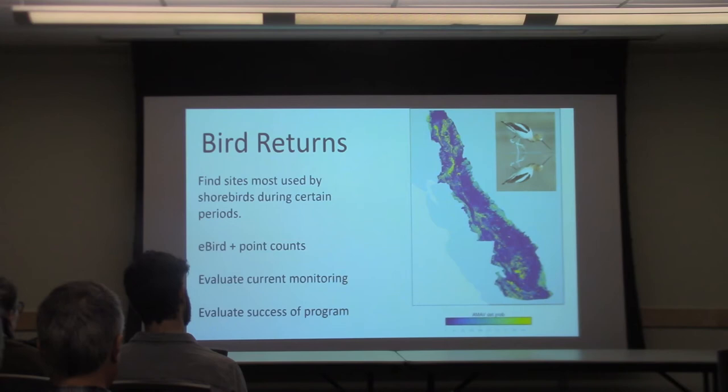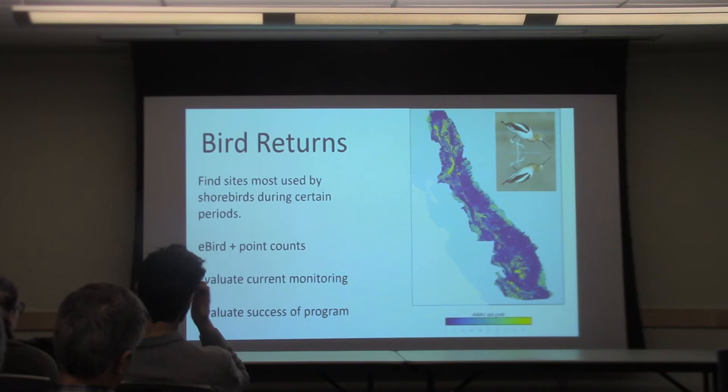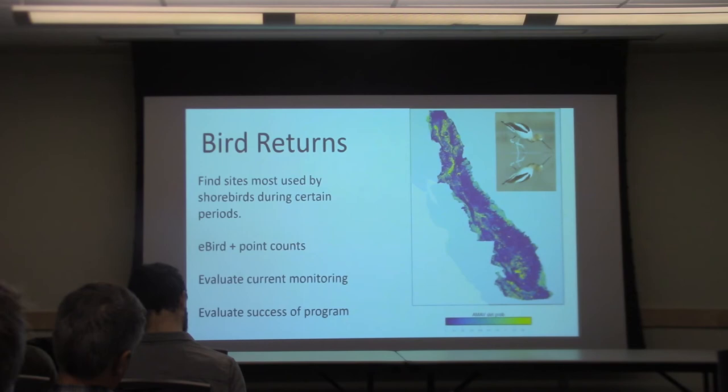We can also take the eBird data, look at a wider surrounding area, and determine if there's been a population-level response to what they've been doing — answering questions like: are we actually increasing the number of birds, or are we just moving them around by managing in this way? We can also evaluate whether they should continue to monitor certain sites, since eBird may already have those sites covered and the time and money spent surveying them could be spent somewhere else.